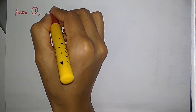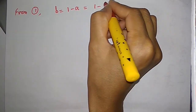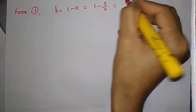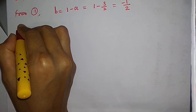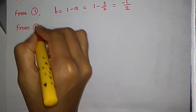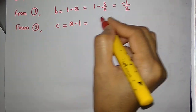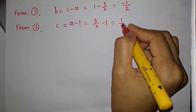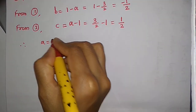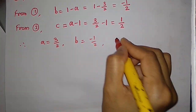From equation (1), b = 1 − a = 1 − 3/2 = −1/2. From equation (2), c = a − 1 = 3/2 − 1 = 1/2. Therefore a = 3/2, b = −1/2, and c = 1/2.